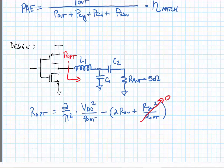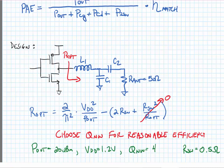When we design this, all we have to do is choose a reasonable network quality factor in order to keep the efficiency of the matching network relatively high. If you give this a try before the next lecture, I will solve an example at the beginning of the next lecture. That example would be an output power of 20 dBm with a supply voltage of 1.2 volts, network quality factor of 4, and R switch of 0.5 ohms.